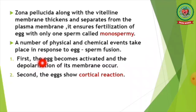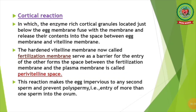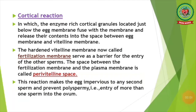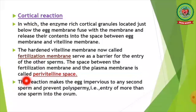A number of physical and chemical events take place in response to egg-sperm fusion. First, the egg becomes activated and depolarization of its membrane occurs. Second, the egg shows a cortical reaction. Cortical reactions involve the enzyme-rich cortical granules located just below the egg membrane fusing with the membrane and releasing their contents into the space between the egg membrane and the vitelline membrane. The hardened vitelline membrane, now called the fertilization membrane, serves as a barrier for the entry of other sperms. The space between the fertilization membrane and the plasma membrane is called the perivitelline space. This reaction makes the egg impervious to any second sperm and prevents polyspermy — the entry of more than one sperm into the ovum.